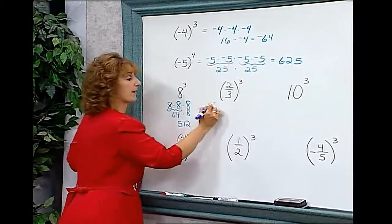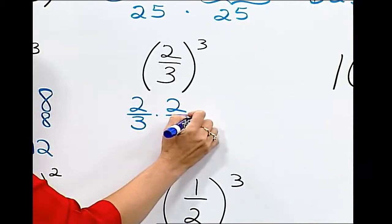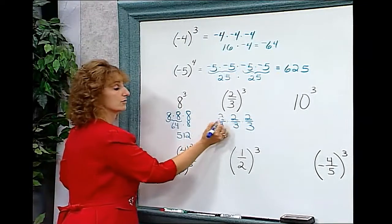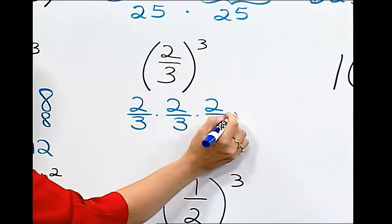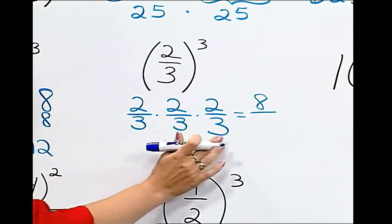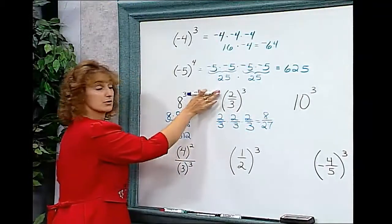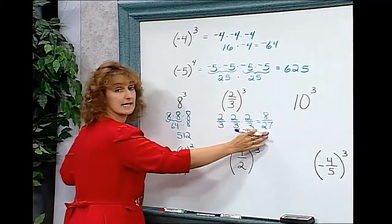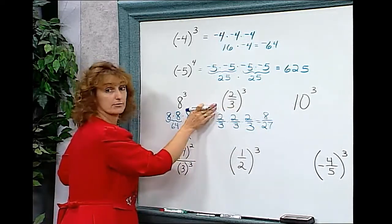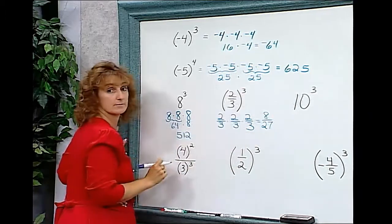Two-thirds to the third power means two-thirds times two-thirds times two-thirds — it's the entire fraction. 2 times 2 times 2 in the numerators is 8, and 3 times 3 times 3 in the denominator is 27. So two-thirds to the third power is 8 over 27. Remember, if the entire fraction is in parentheses, you use the entire fraction the number of times the exponent says.